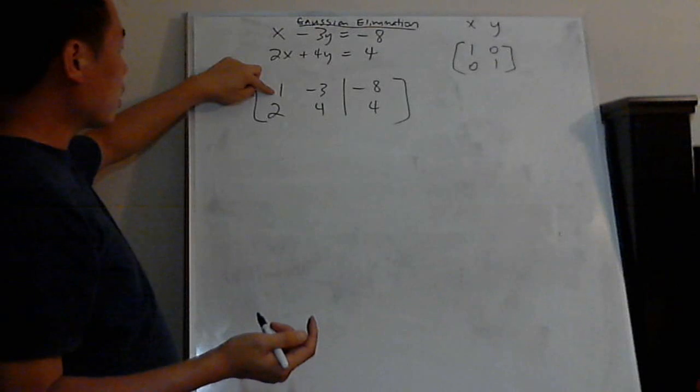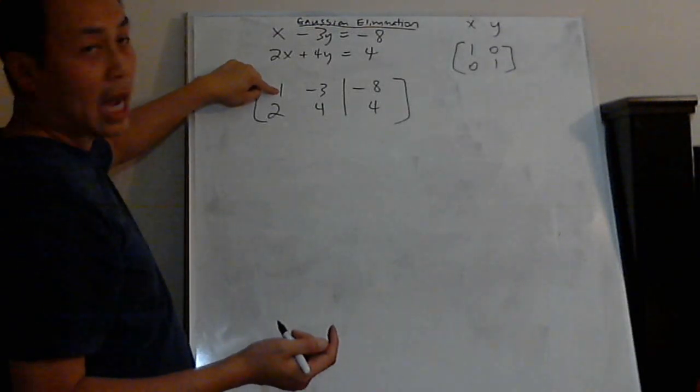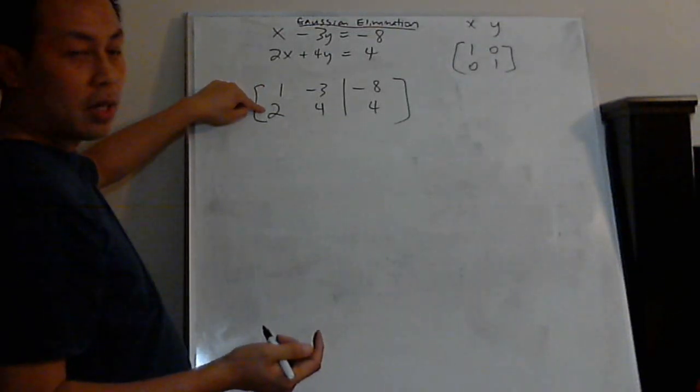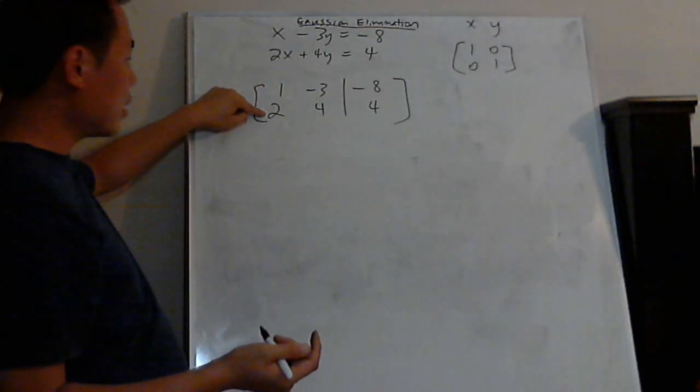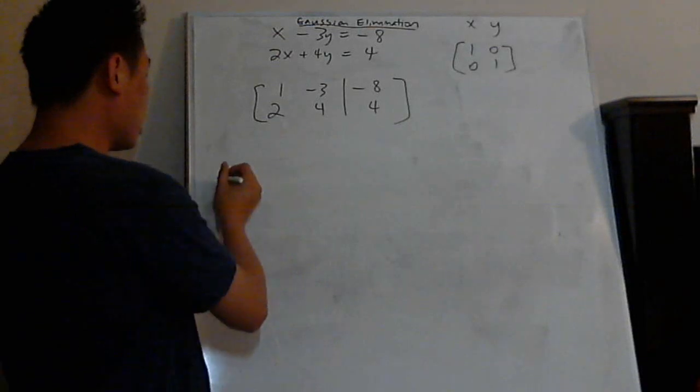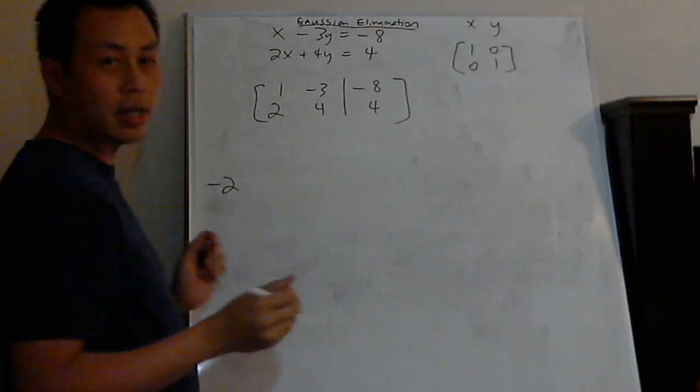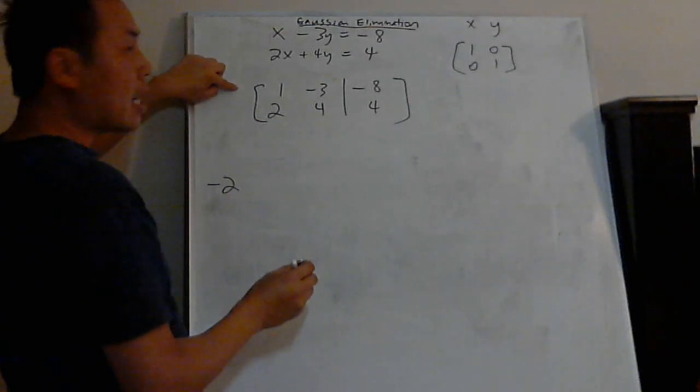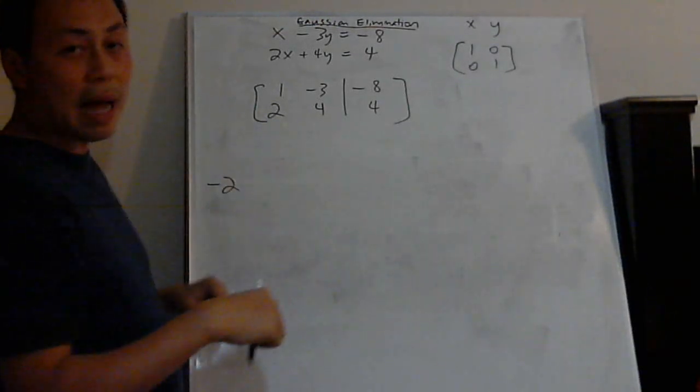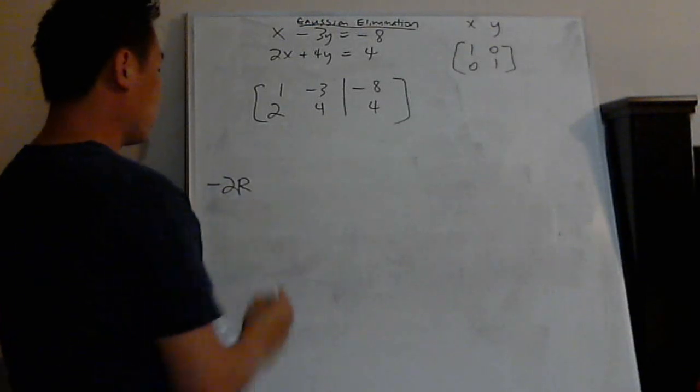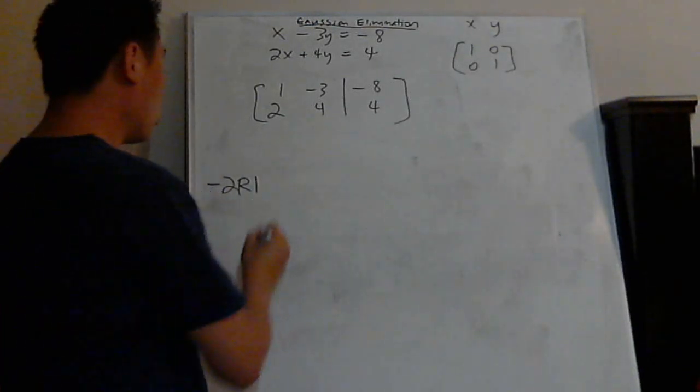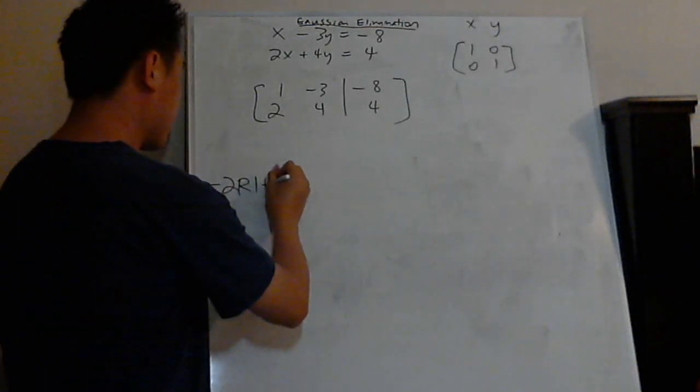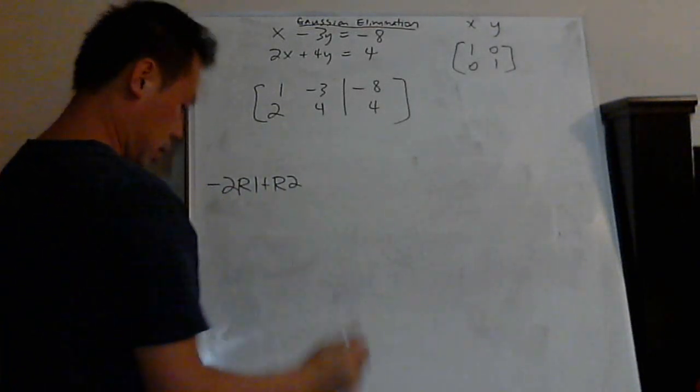So how can I do that? Well, I can multiply, how about this? If I multiply the first row by negative two, let's say. If I multiply by negative two, the first row, that's negative two times one, right? Which is negative two. And if I add it back to the row two, that makes it a zero, right?